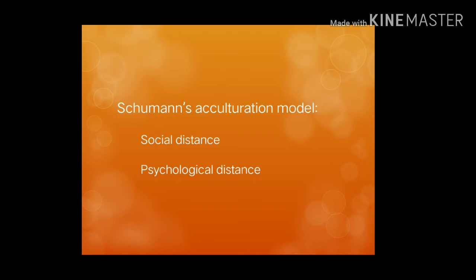The characteristics of social distance: the first one is social dominance patterns — to native language learners, the reference group can be superior, inferior, or equal in terms of politics, culture, technology, or economics. The second one is integration strategies — assimilative learners give up native language values and lifestyles. The third one is enclosure — when groups share social facilities, enclosure is low, which supports language learning.